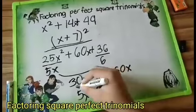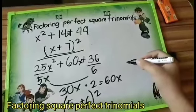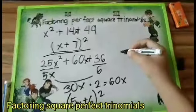So the answer is 5x plus 6, the quantity squared. Now if you want to verify it, we just have to use the FOIL method.